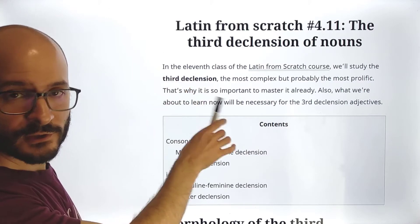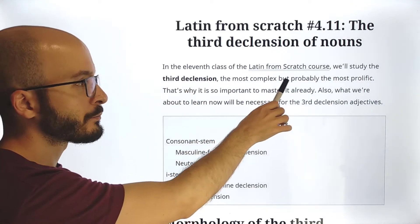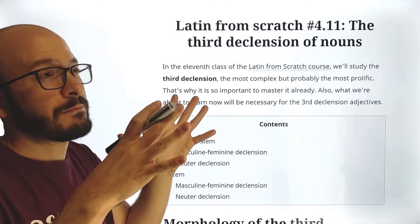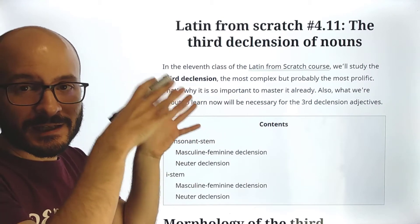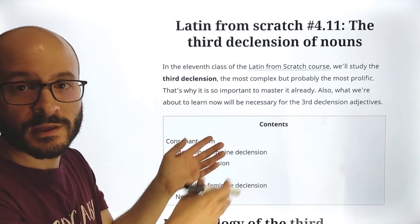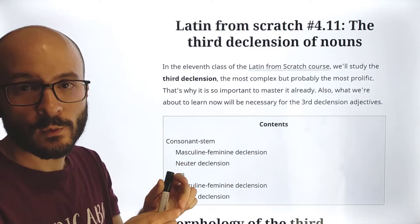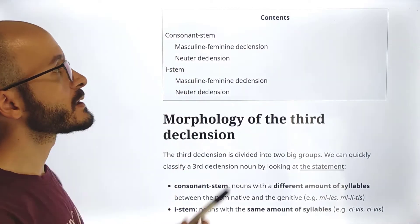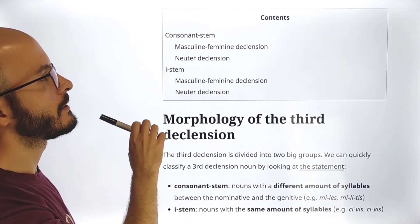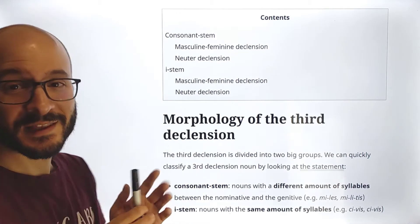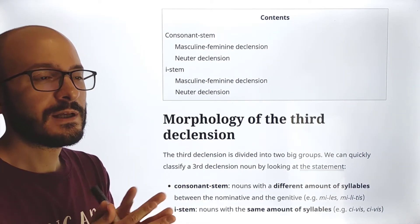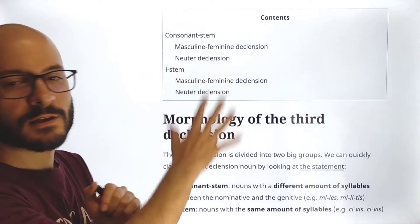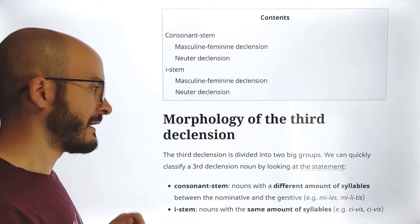This third declension is the most complex, but probably the most prolific, meaning that maybe around 40% of Latin nouns are going to belong to this declension. So we really have to know the third declension very well. In the table of contents you see things like 'consonant stem,' 'e-stem,' etc. This means that we cannot do like we did with the first and second declension, where we pretty much said 'here's the table, learn it by heart.' It's not so simple here.